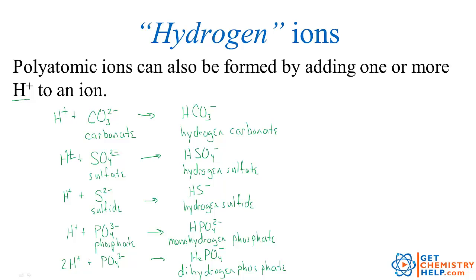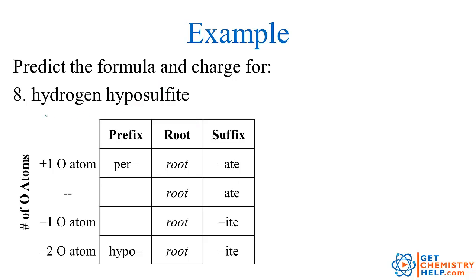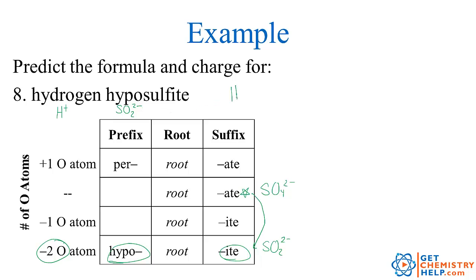Let's go through a few examples. Hydrogen hyposulfite: hydrogen tells me we're adding H+, hyposulfite means we're down at the hypo- level. Sulfate is SO4 2-negative, so hyposulfite lost two oxygens: SO2 still two negative. Combining H+ with SO2 2-negative gives HSO2 single negative.